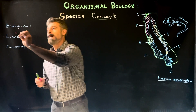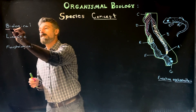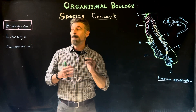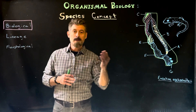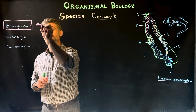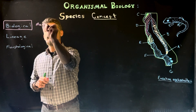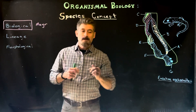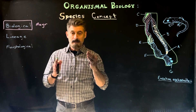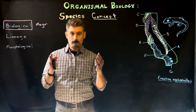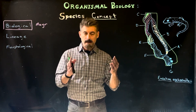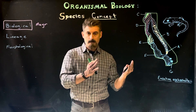The main definition of species comes from what we call the biological species concept, proposed by Ernst Mayr. This essentially says that a species is defined as a population of organisms that can interbreed and have fertile offspring.